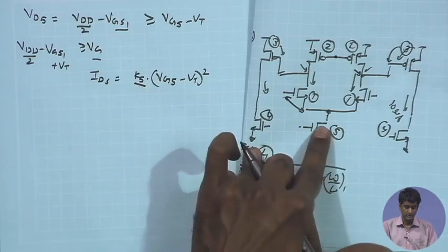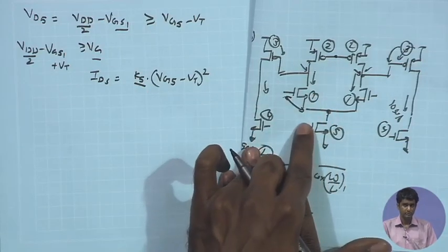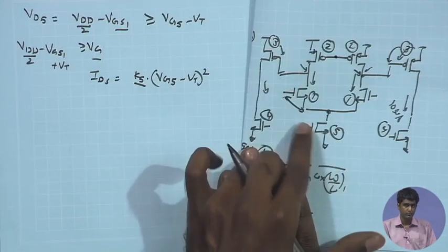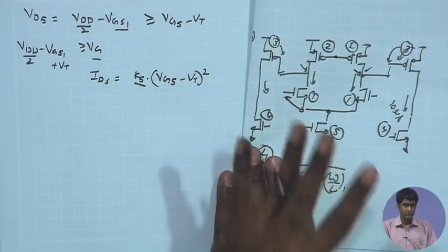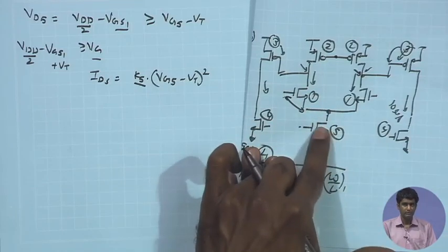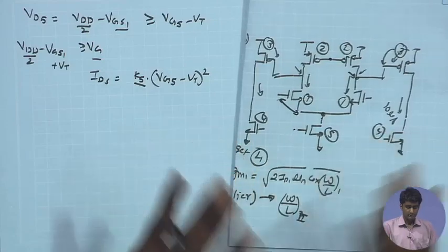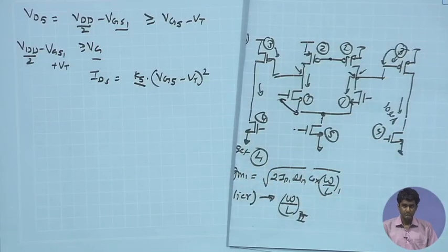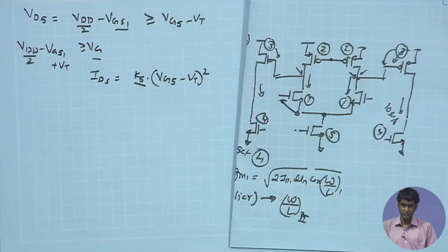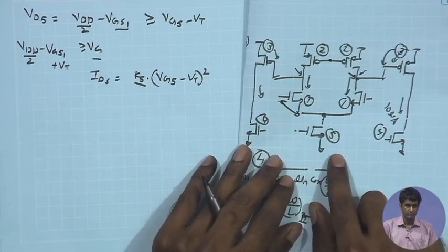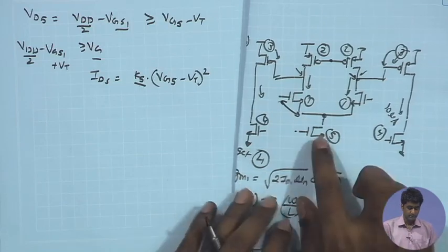For a bias current of around 20 µA for this stage, having VGS5 lower than 0.7V is not very difficult. A W/L ratio close to 10 or 20 can easily achieve the required VGS around 0.5V, very close to the Vt of M5. In the 180 nm technology model used in simulations, the value of Vt is around 0.4V, so we can expect an overdrive voltage of around 0.1V for a nominal W/L of around 10.